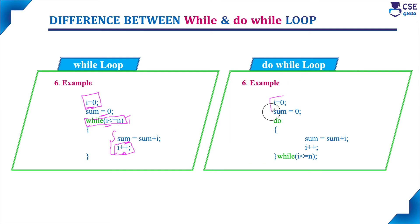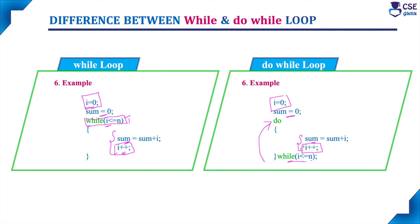In do while loop, considering the same example: i value is initialized to zero — this is the loop variable — and sum is initialized to zero. Then by default these two statements will execute at least one time. It will find the sum and update the i variable. Then at the bottom of the loop only it will check the condition whether i value is less than or equal to N. If the condition is true it will allow the body of the loop to execute one more time. So in while loop, initialization is done first, then condition evaluation is at the top of the loop, but in do while loop condition evaluation is at the bottom. Updation is at the end of the body of the loop in both while loop and do while loop.